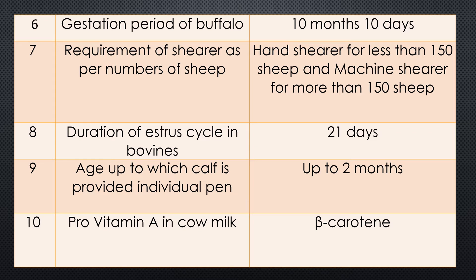Question nine: Age up to which the calf is provided an individual pen. This is important from disease prevention, growth, nutrition, and cleanliness points of view. The answer is up to two months, the calf should be provided an individual pen separate from the mother and separate from other calves also.